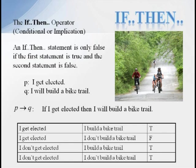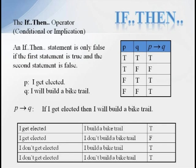If he gets elected and builds a bike trail, he certainly told the truth. If he gets elected and does not build a bike trail, he certainly lied. But what if he doesn't get elected? In this case, it does not matter what he does with the bike trail. His original statement only said what he would do if he got elected. The only way an IF-THEN statement can be false is if the IF portion is true and the THEN portion is false. So a truth table for IF P THEN Q only has one false value when P is true and Q is false.